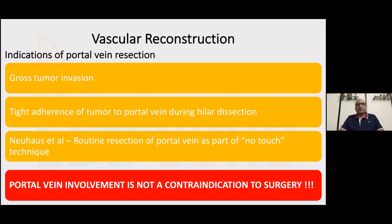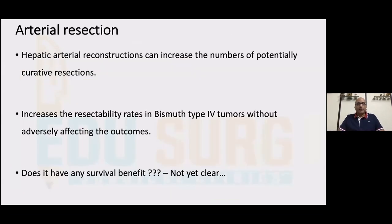Vascular reconstruction: we have to selectively weigh the pros and cons. Contralateral vascular involvement is not a contraindication for surgery so long as you can achieve R0 disease with good vascular reconstruction and good prograde flow. Portal vein involvement is certainly not a contraindication. Arterial resections on the contralateral side have very unclear outcomes — there are aggressive surgeons who do contralateral arterial resections and reconstructions, but the survival benefit is not yet very clear for arterial reconstructions.